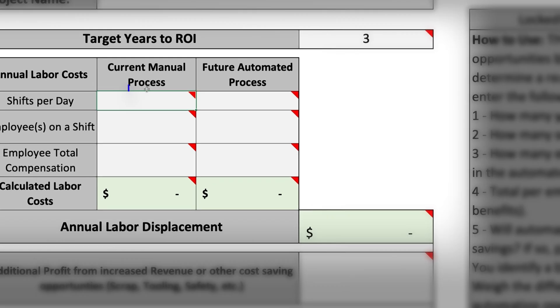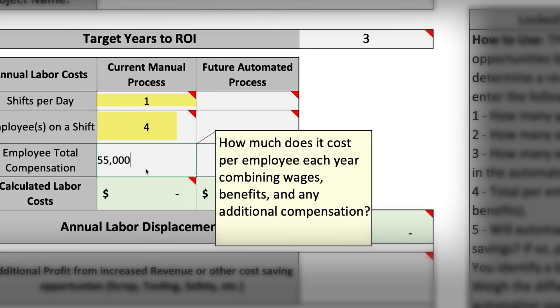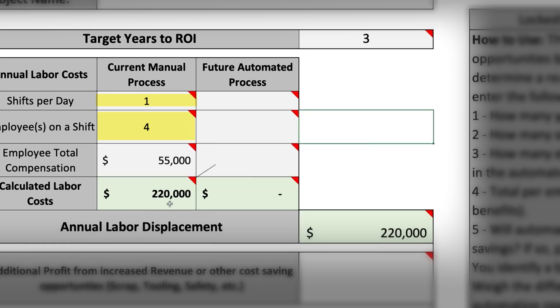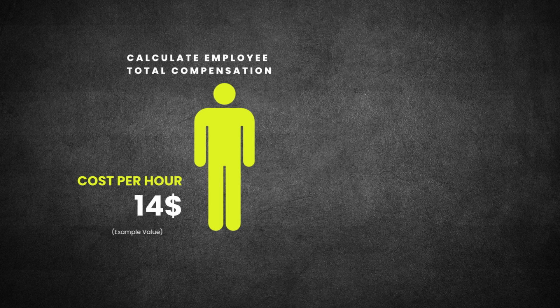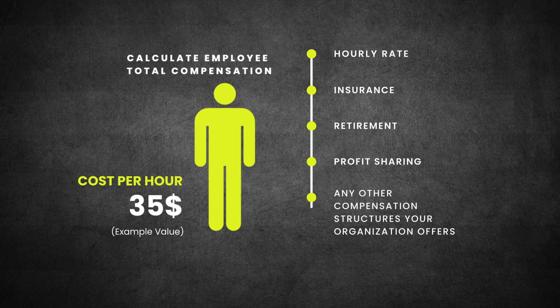Our example manual process, represented by the left column, has one eight-hour shift and needs four employees on that shift. In this example, each employee costs your company $55,000 a year. To have an accurate budget, this value should represent the full cost of your team member, meaning you account for the hourly rate, insurance, retirement, profit sharing, and any other compensation structures your organization offers. Cutting this number short might also cut your potential upside short.